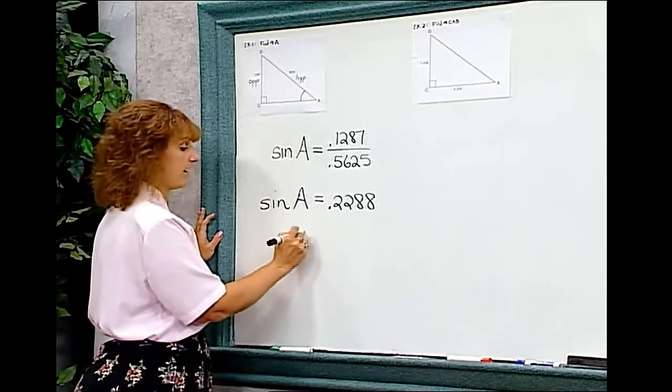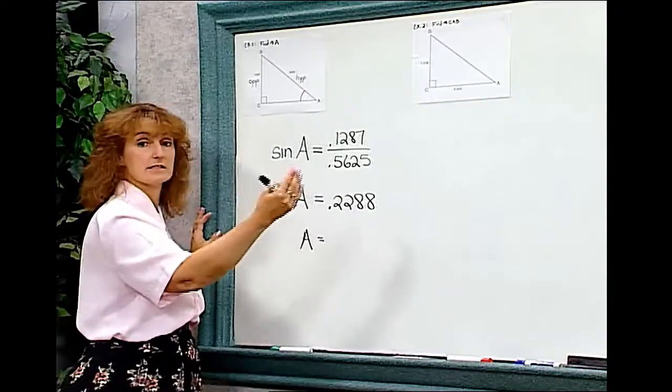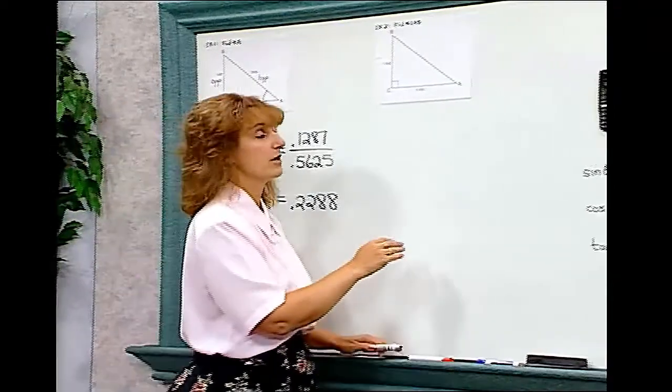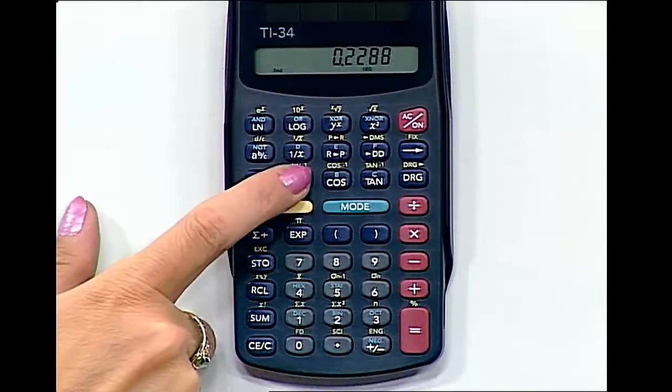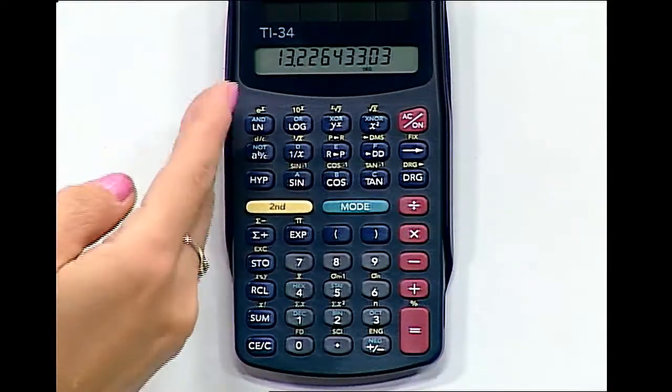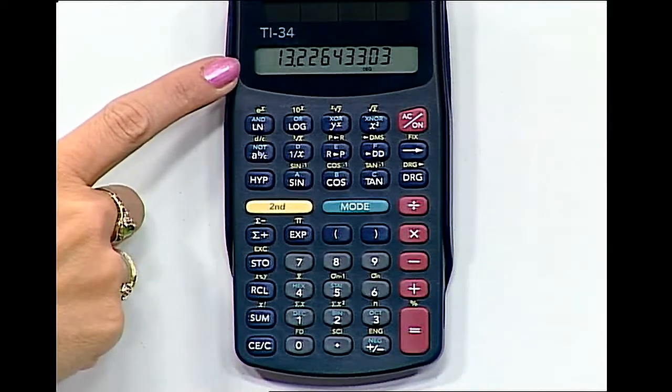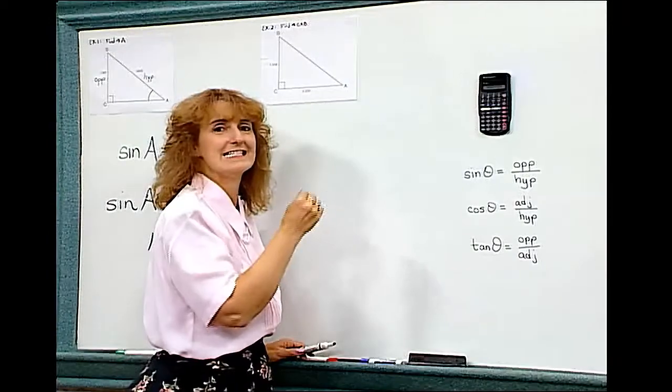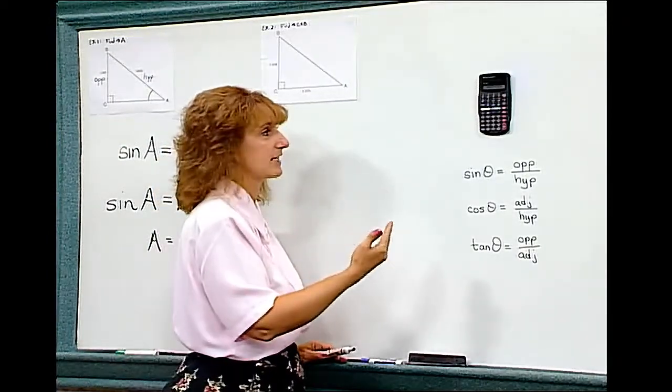In order to find angle A, we need to use our second sine button to get the arc sine. So I come back to my calculator, I hit second sine, and I get 13.22643303. But remember, that's in decimal degrees, and I want degrees, minutes, seconds.